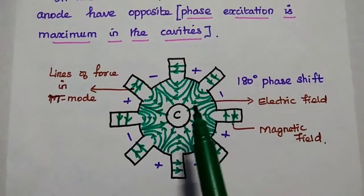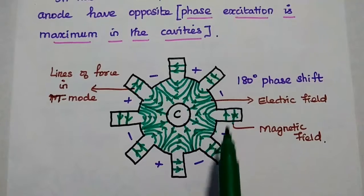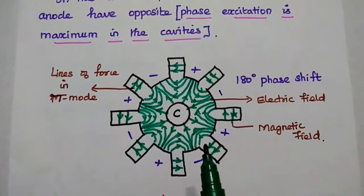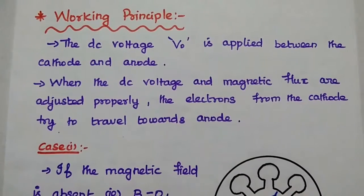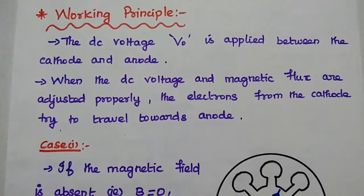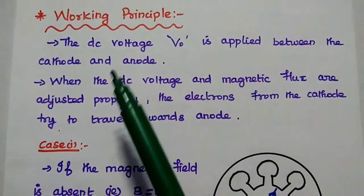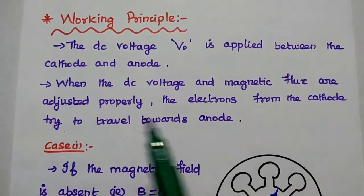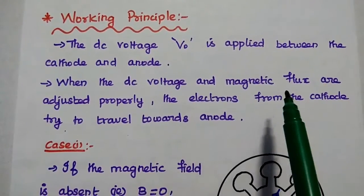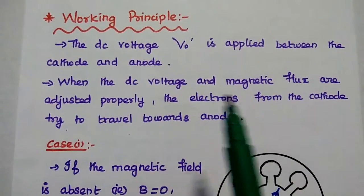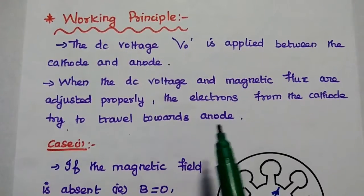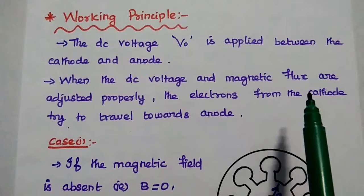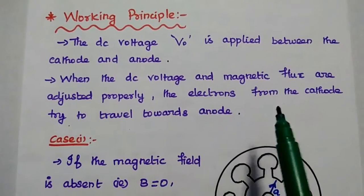The electric field is in the radial direction and the magnetic field is in the axial direction. This is the line of force in pi mode for the cylindrical magnetron. In the working principle, a DC supply voltage is applied between the anode and cathode. When the DC voltage and magnetic flux are both adjusted properly, the electrons from the cathode travel towards the anode. We can adjust the supply voltage as well as the magnetic flux by changing the magnetic properties.